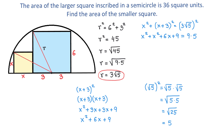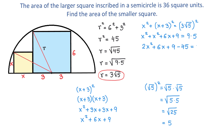In the next step we add x squared and x squared together to get 2x squared plus 6x plus 9. On the right side, 9 times 5 is 45. We subtract 45 to the left side, so we now have minus 45 after the 9, and the right side becomes 0.